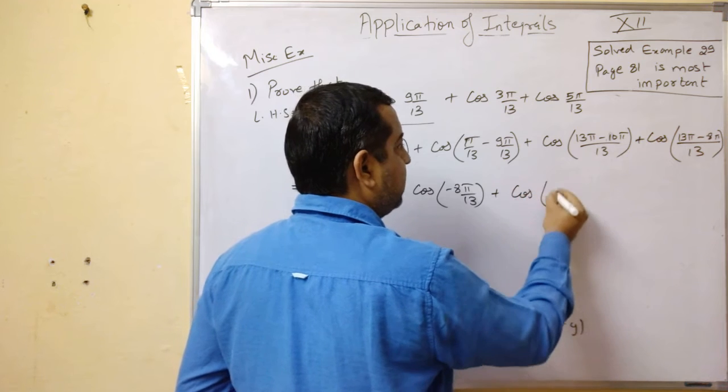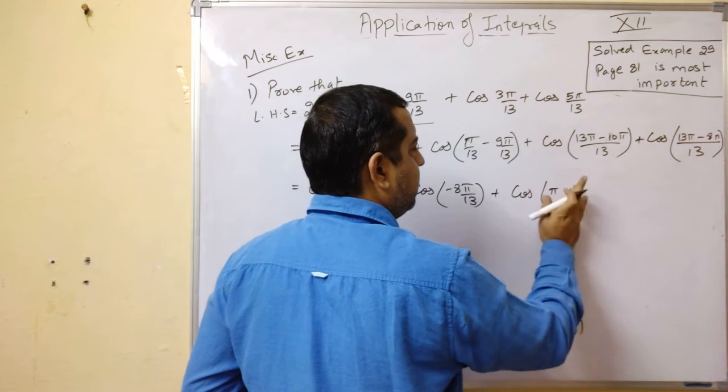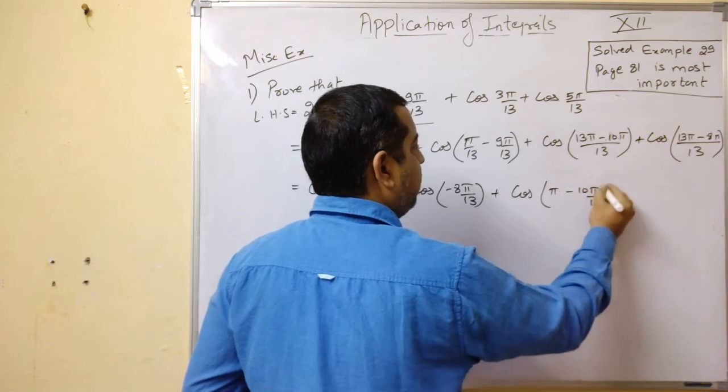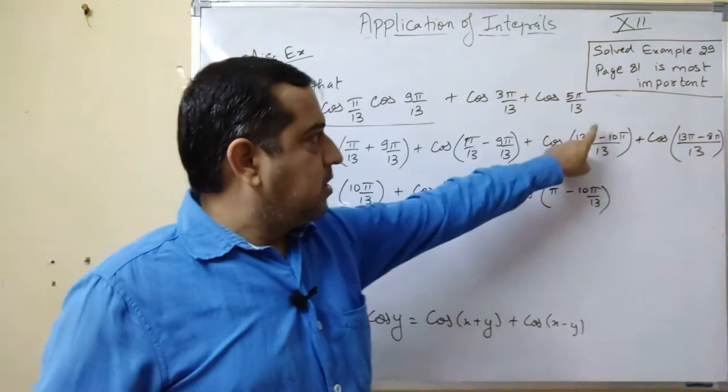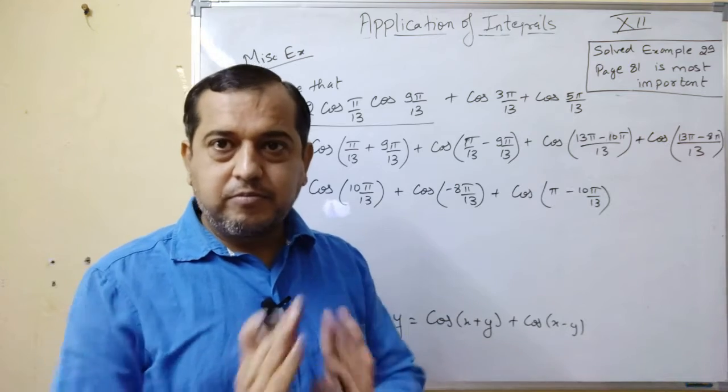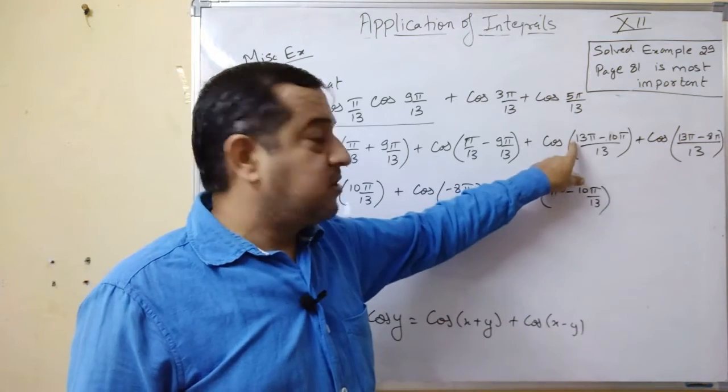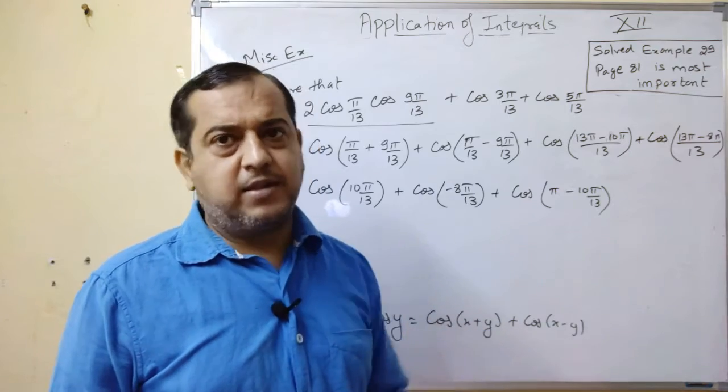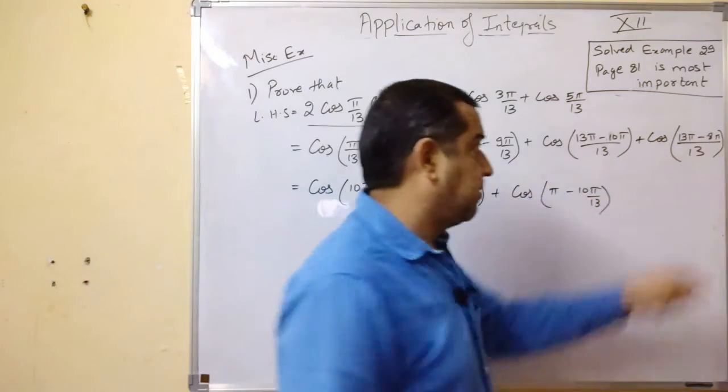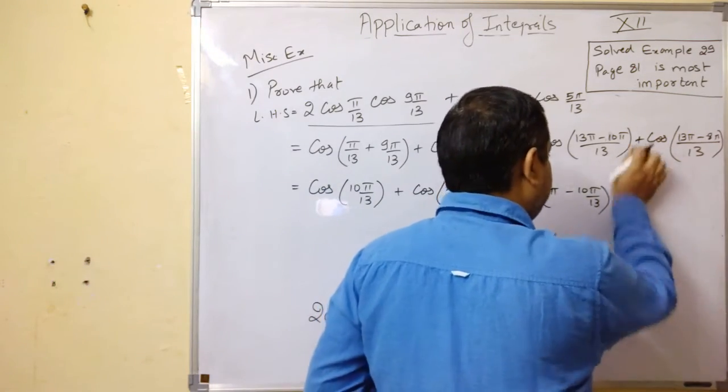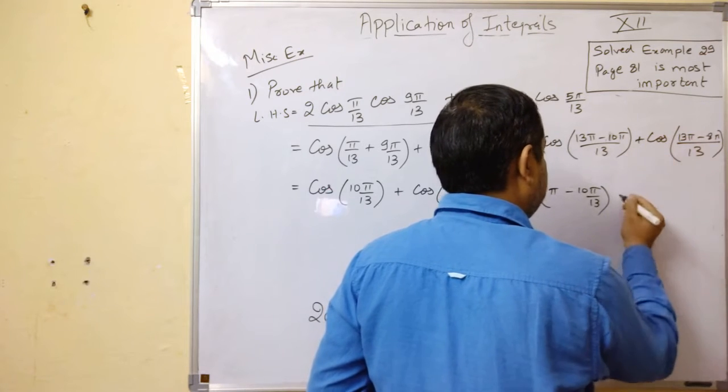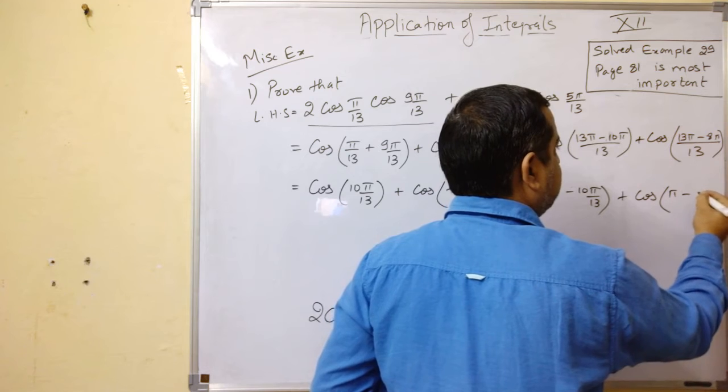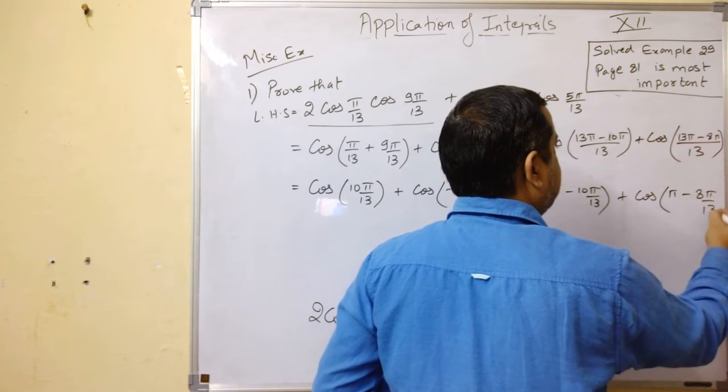So here we can write this as cos(π - 10π/13). We can separate it: 13π upon 13, 13 cancels, you get π. Second part as it is minus π/13. Same separation. So we get plus cos(π - 8π/13).